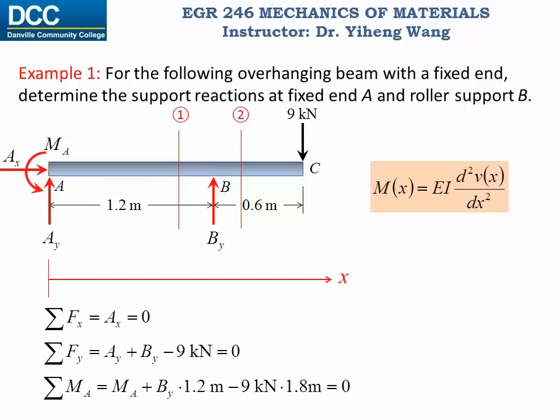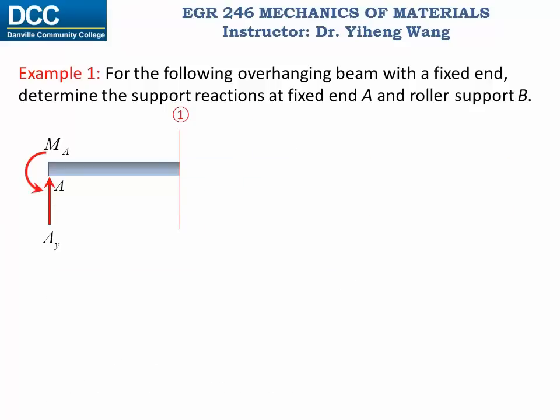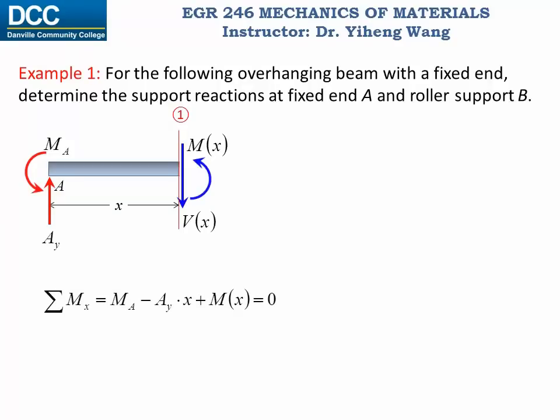At this point you might be wondering we cannot solve for the bending moment for sure. That is correct. Therefore what we are trying to achieve here is simply to express the bending moment function using the unknowns. Since Ax is zero, we can eliminate it from our free body diagram. Now we have two equations and three unknowns. At section one, this is the arbitrary length x, and these are the internal shear force and bending moment at this location. Since we are only interested in the bending moment function, we only need to write a moment equilibrium equation and solve for M(x) as a function in terms of the unknowns Ay and MA. This is our first equation in our bending moment function.